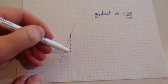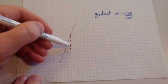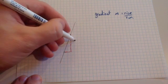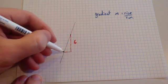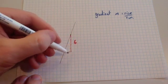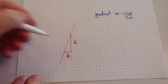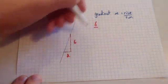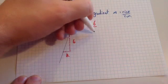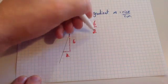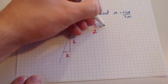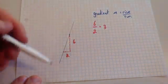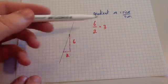We make a little right-angled triangle — go across and then go up. Then write down the rise and the run. The rise is 6, and the run is 2. So we do rise 6 divided by run 2, and 6 divided by 2 is 3. So the gradient, or the steepness of this line, is 3.